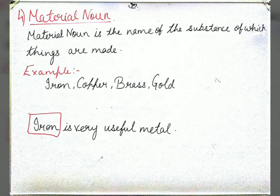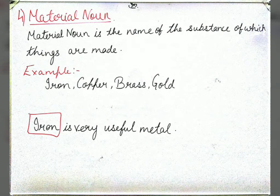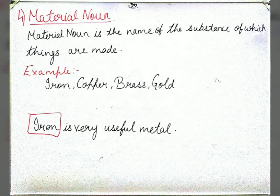The fourth type is material noun. A material noun is the name of the substance of which things are made. Examples are: iron, copper, brass, gold, silver, bronze. These are all matter — as you have studied in science — and many things are made from them, so we call them material nouns. For example: iron is a very useful metal — here iron is the name of a material, so it is our material noun.